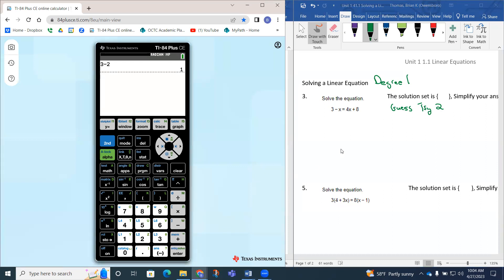So the left side would be 1. On the right side, when you replace 2 for x, that's 4 times 2 plus 8, which gives me 16. Notice how 1 does not equal 16, so 2 is not the solution. I could continue to guess and check until I found the answer.